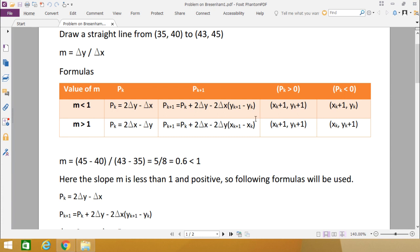Now let me calculate the m value. m is (45 - 40) / (43 - 35). So 45 minus 40 by 43 minus 35. If you do it, it's coming as 5/8 = 0.6, which is less than 1. That means I shall be following the first row of this formula table.